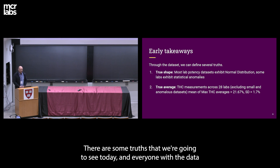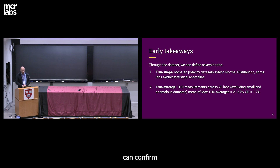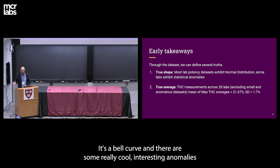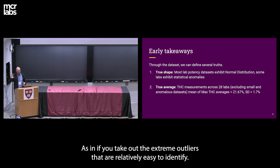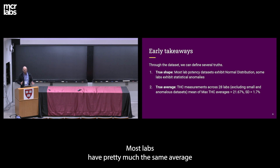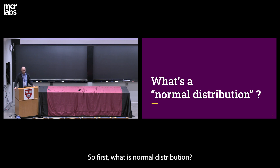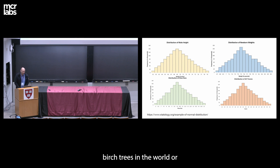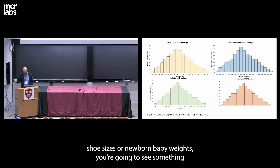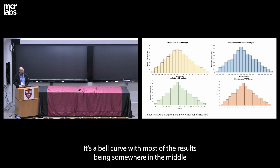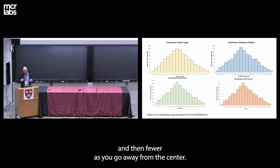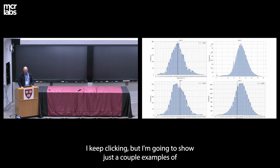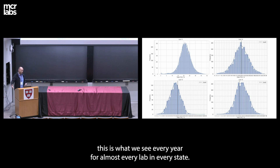Some early takeaways: the shape of THC data, when reported as a histogram, shows a normal distribution — a bell curve. There are interesting anomalies, but if you take out extreme outliers, most labs have pretty much the same average potency. To explain normal distribution: if you take the height of all fully grown birch trees, adult men in the U.S., shoe sizes, or newborn baby weights, you see a bell curve, with most results in the middle and fewer as you go away from the center. We see this in almost all cannabis testing labs across the country.